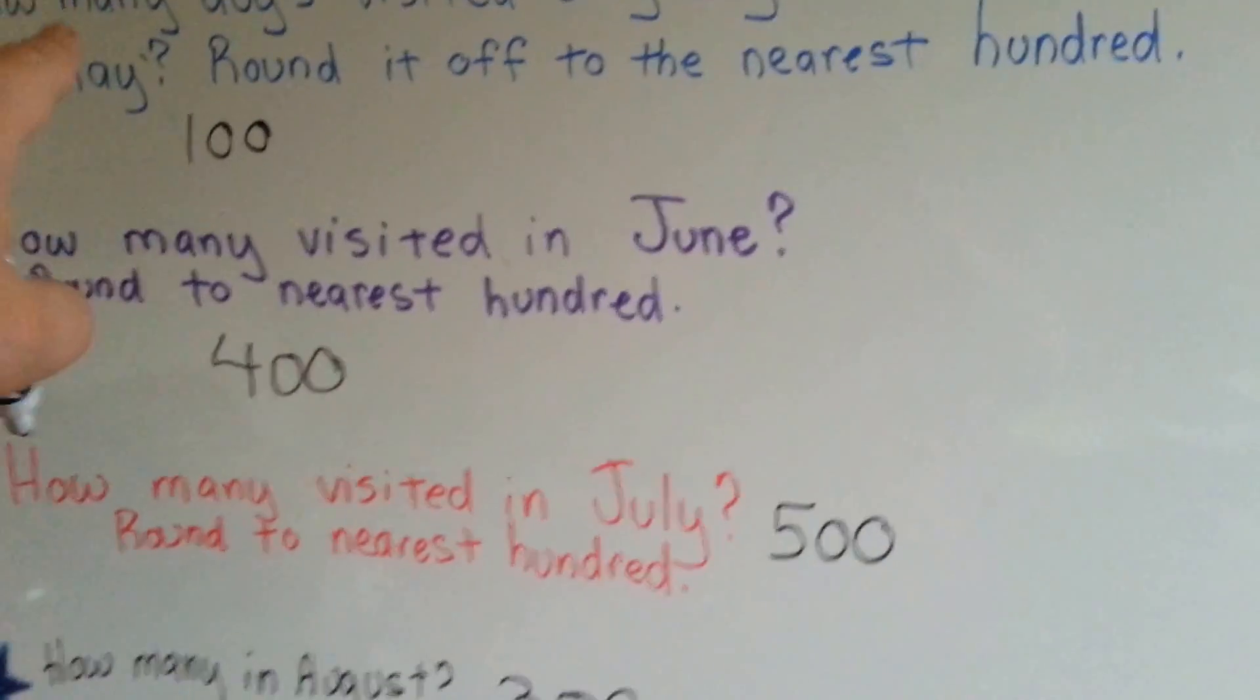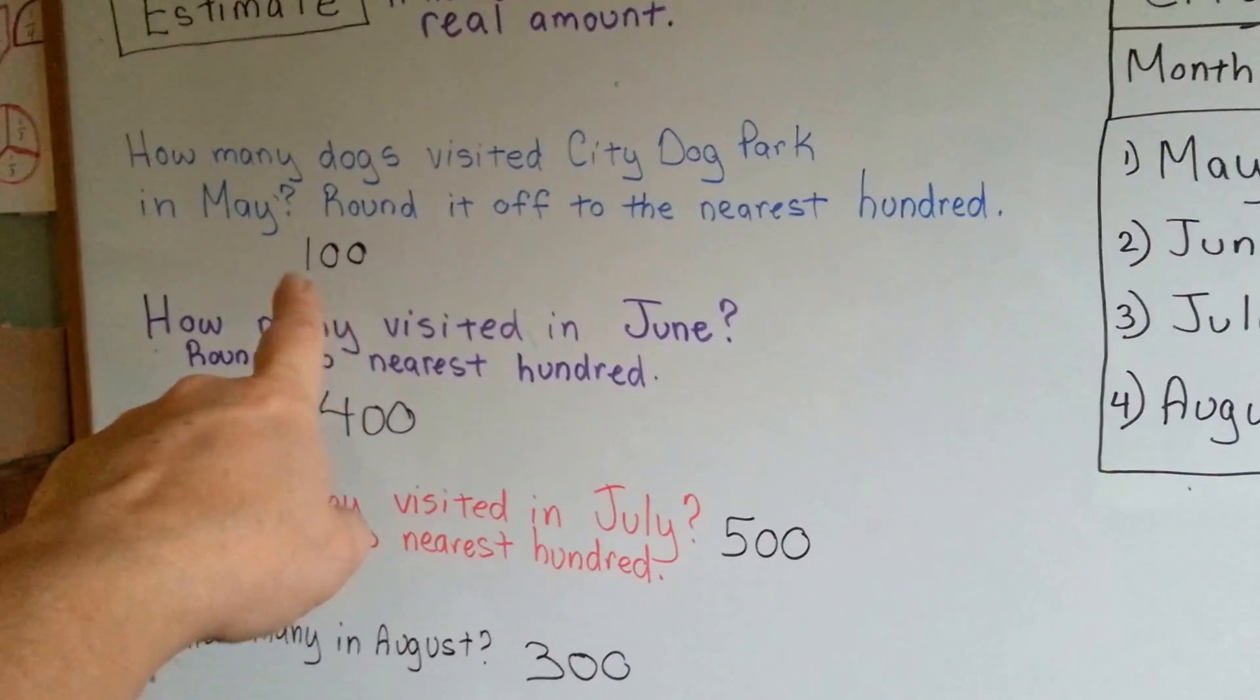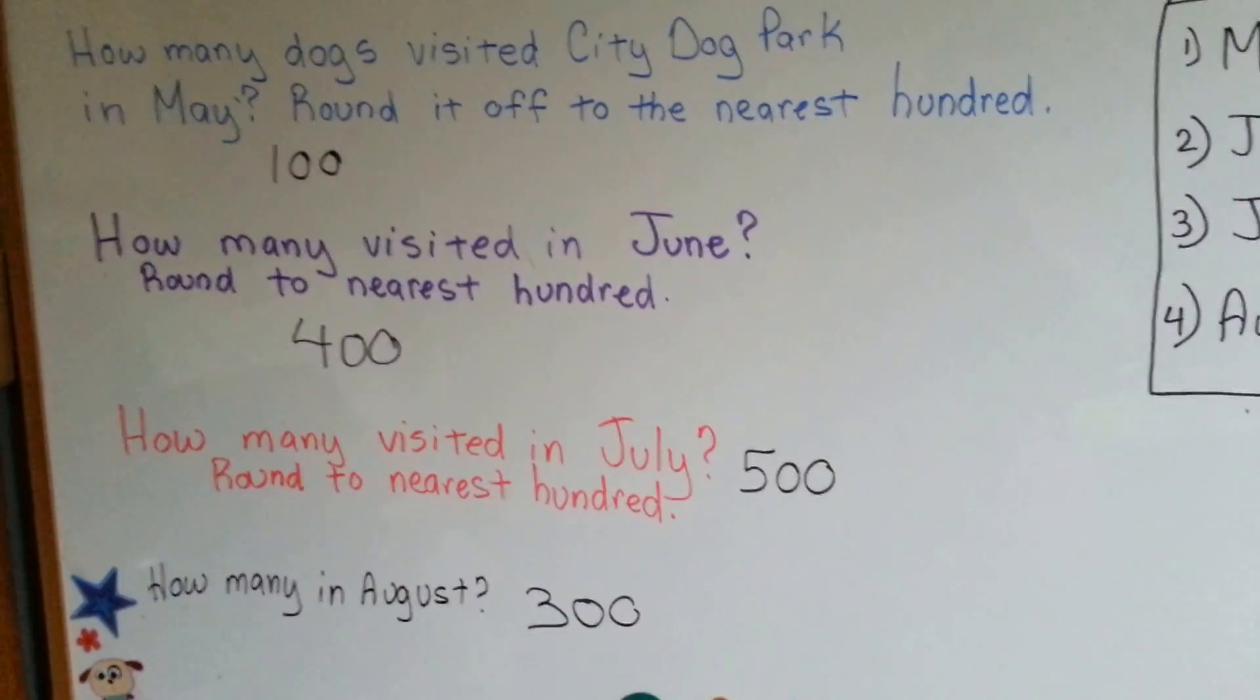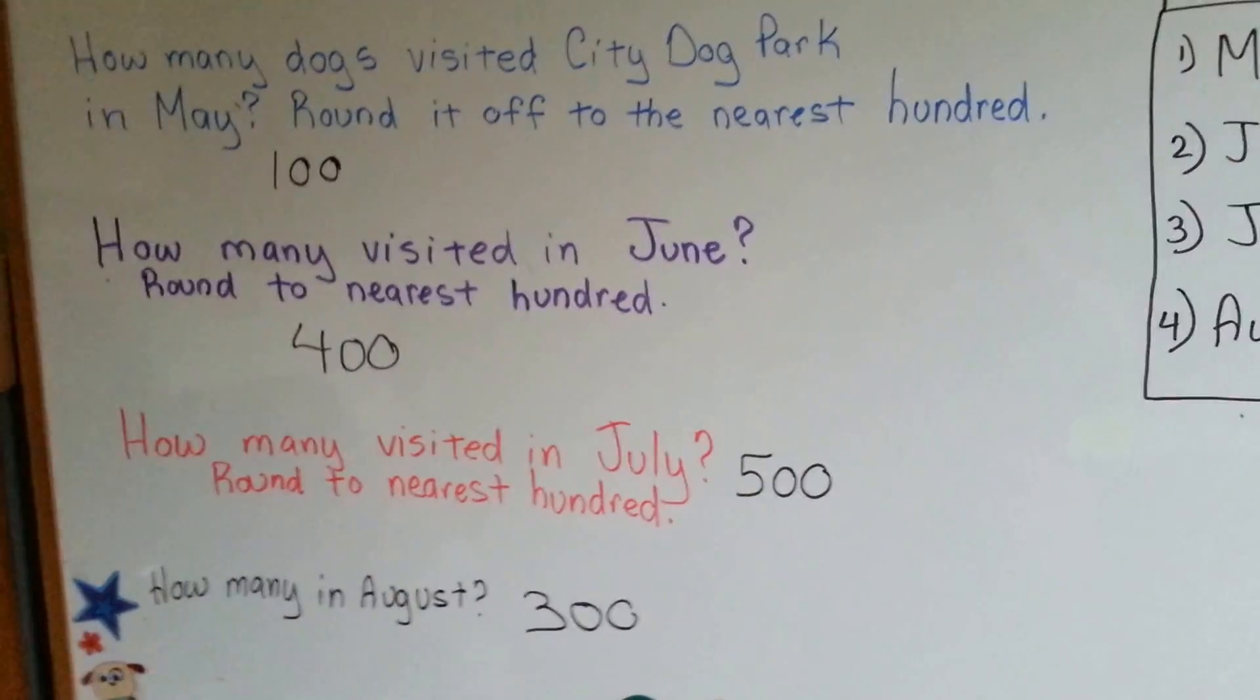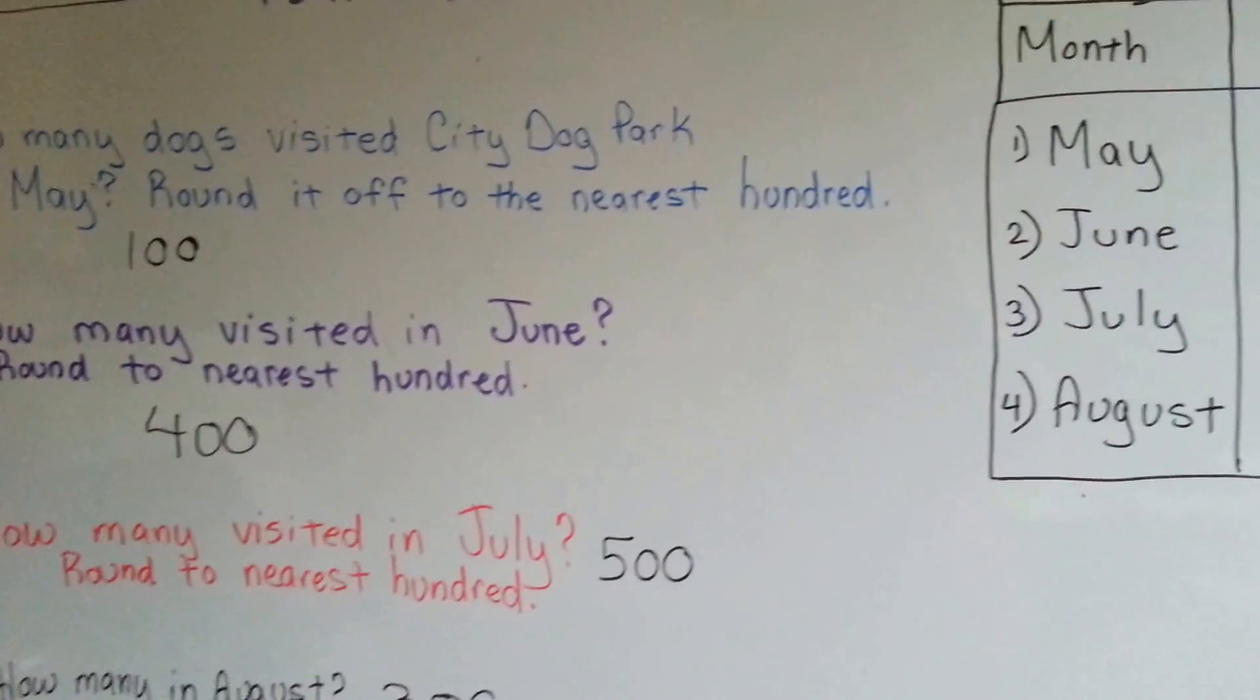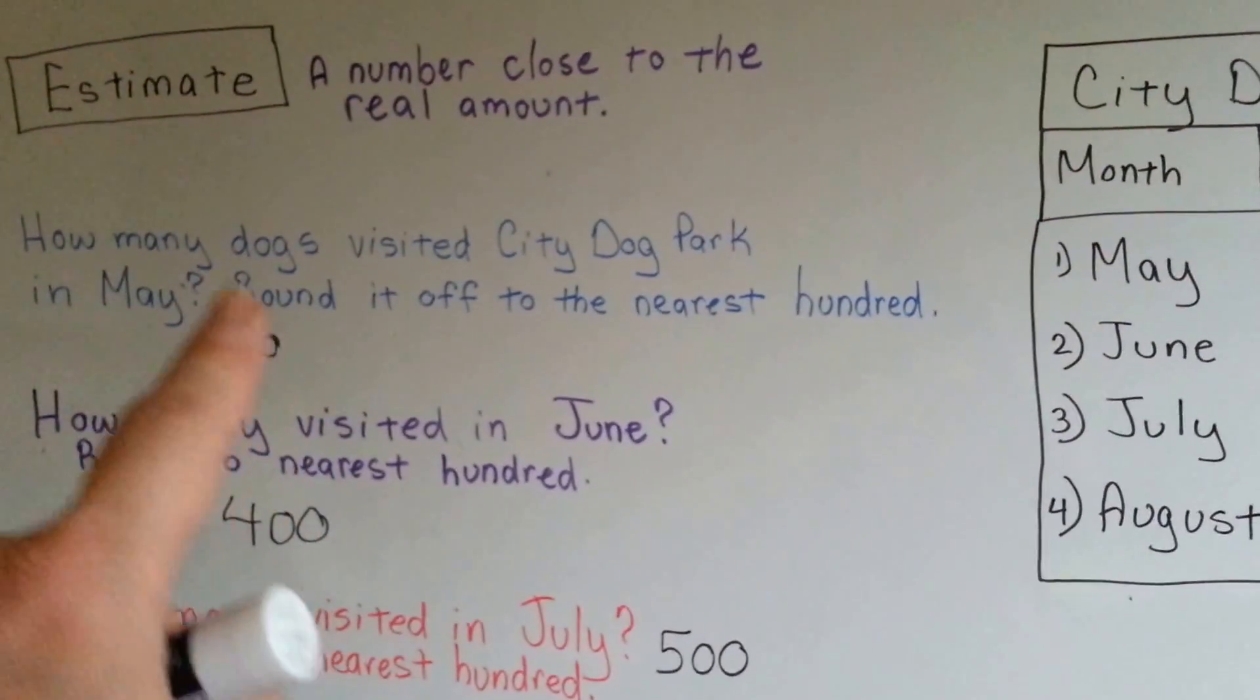So these are estimates. Maybe the man or woman in charge of the city dog park could say to the people who clean it up, how many dogs do you think visited it during the summer? And they would just be able to take these rounded off estimated numbers and add them up, and get an idea of an estimate of how many dogs were there, instead of the exact number.